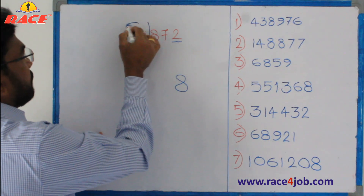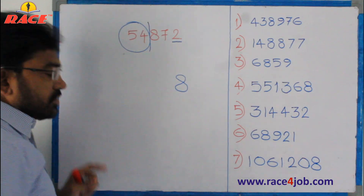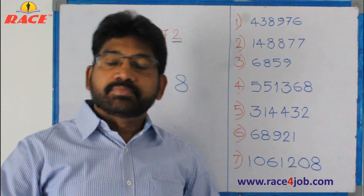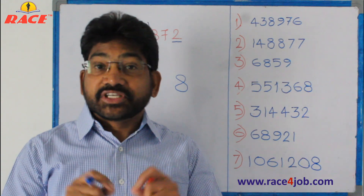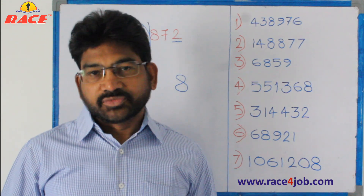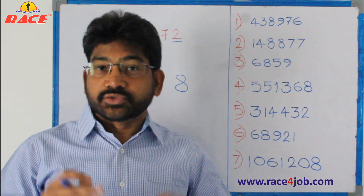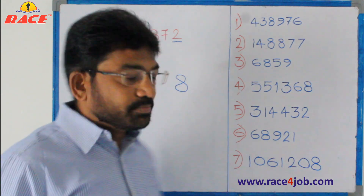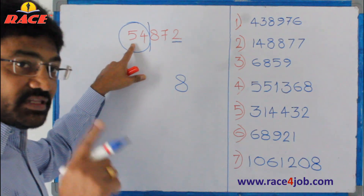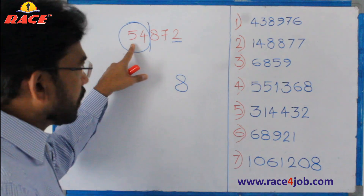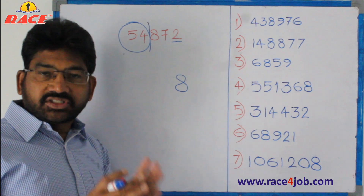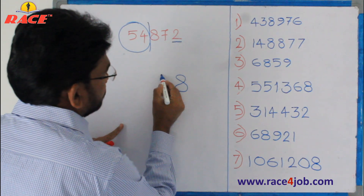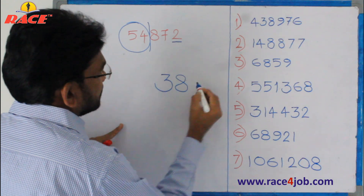Now see the entire left side part — fifty-four. Fifty-four is between which two perfect cubes? Three cubed is twenty-seven, four cubed is sixty-four. Observe: fifty-four is between three cube and four cube. Out of these three and four, you take the smaller one — three — and write it here.